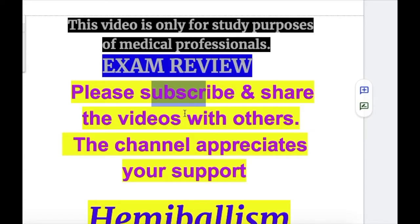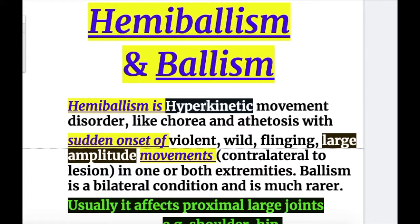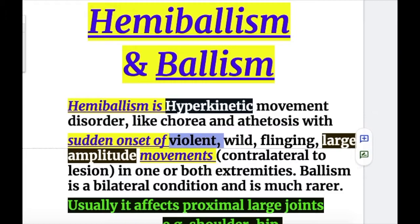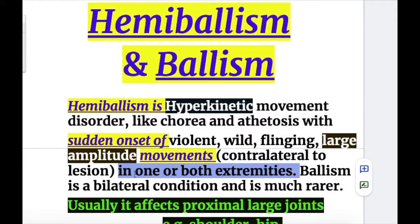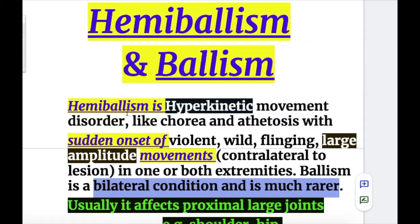In this video we'll discuss ballism and hemiballism. Hemiballism is a hyperkinetic movement disorder, just like chorea and athetosis, with sudden onset of violent, wild flinging, large amplitude movements contralateral to the lesion in one or both extremities. Ballism is a bilateral condition and is much rarer. Hemiballism is unilateral opposite to the site of the lesion, and the movement is wide flinging and of large amplitude.